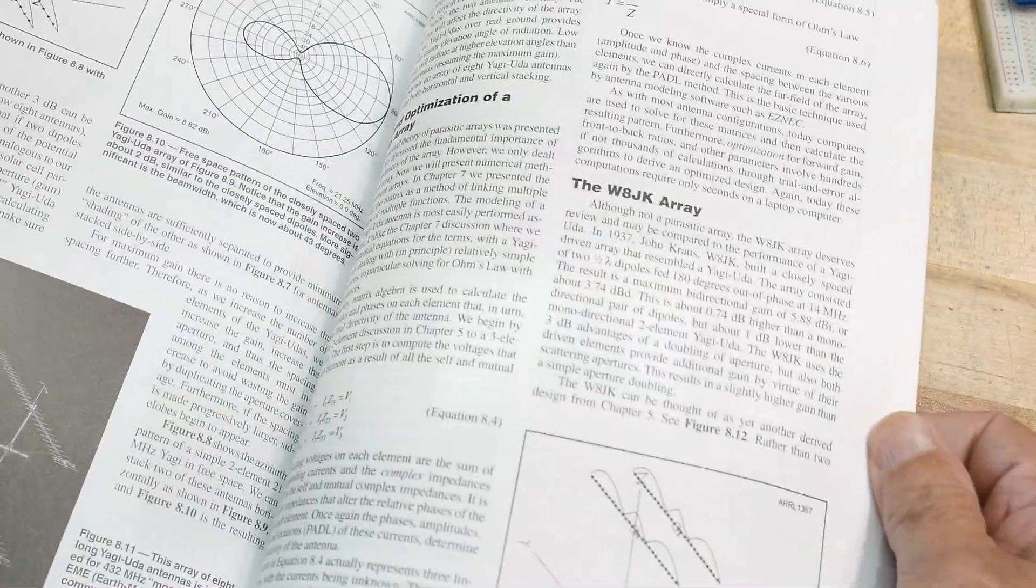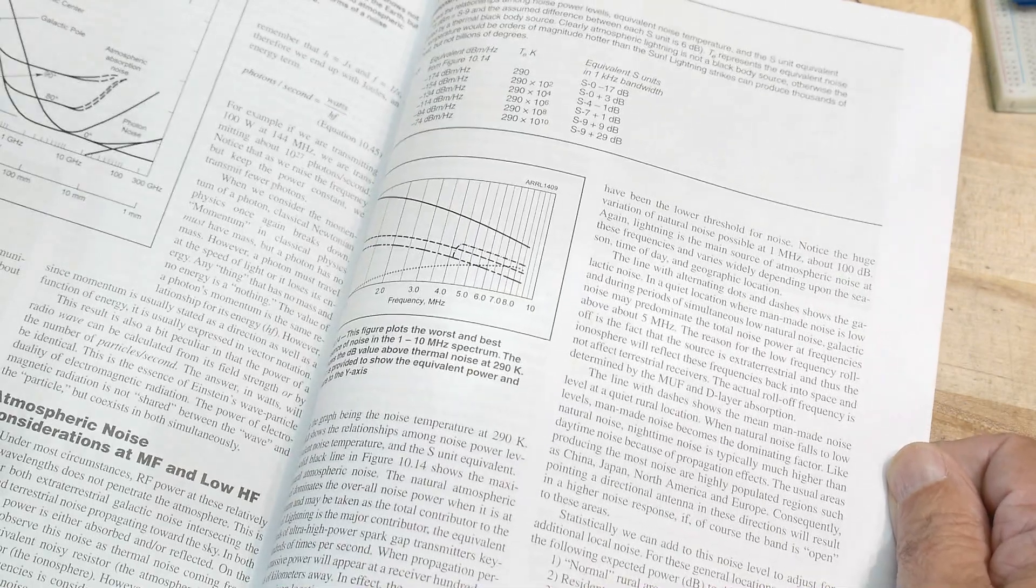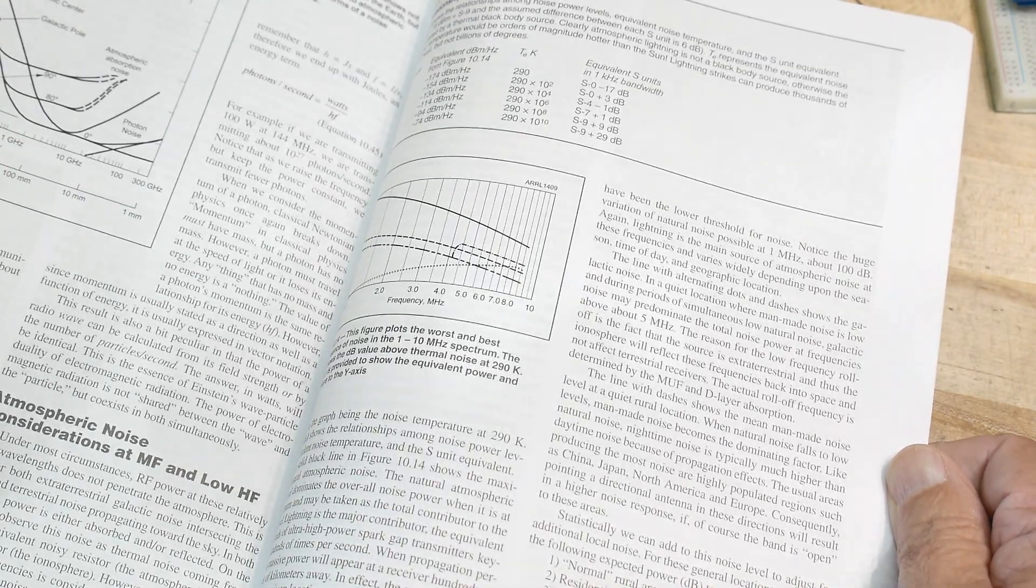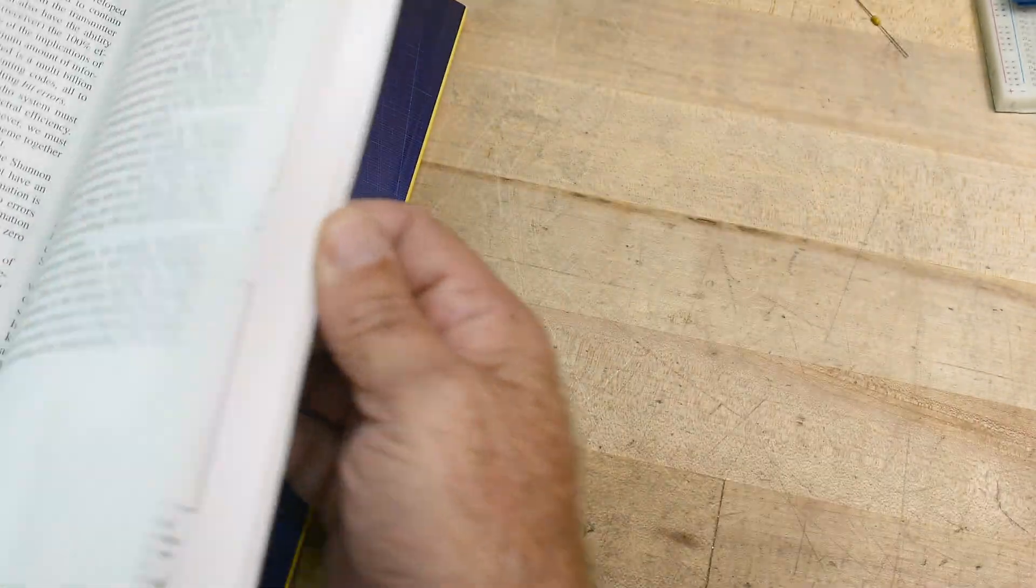Talk about feed points. What else they have in here? Loop antennas. And what's in the back? Galactic noise. Noise in the universe. Anyway, there you go.